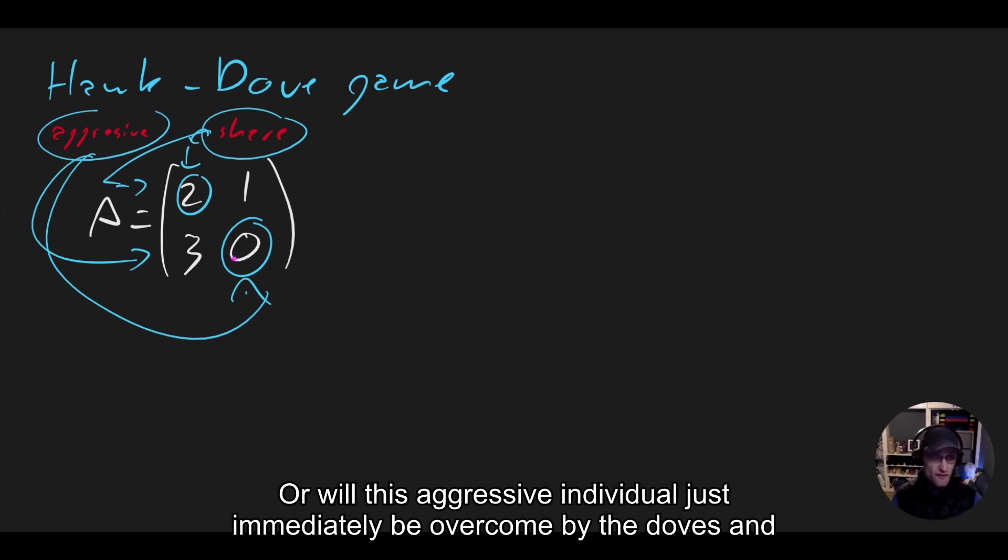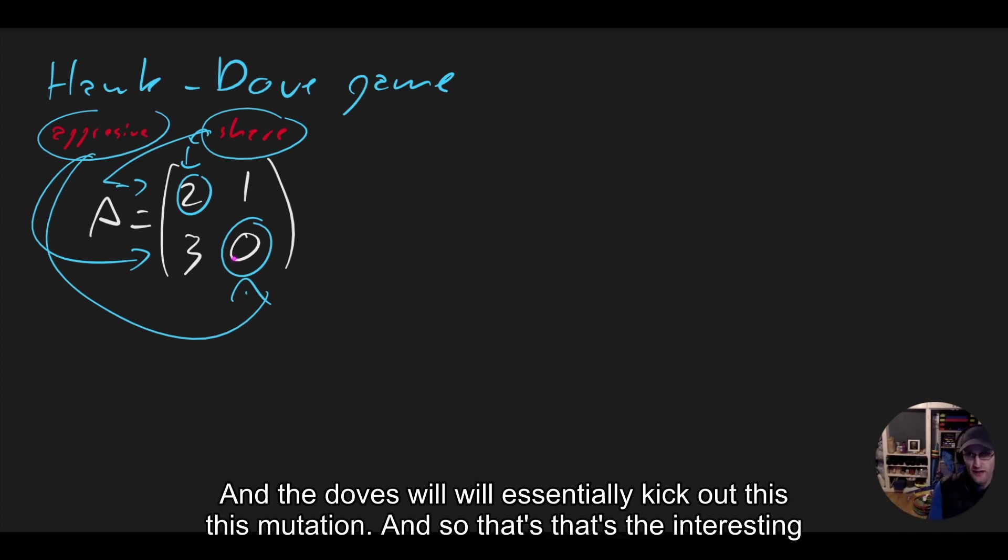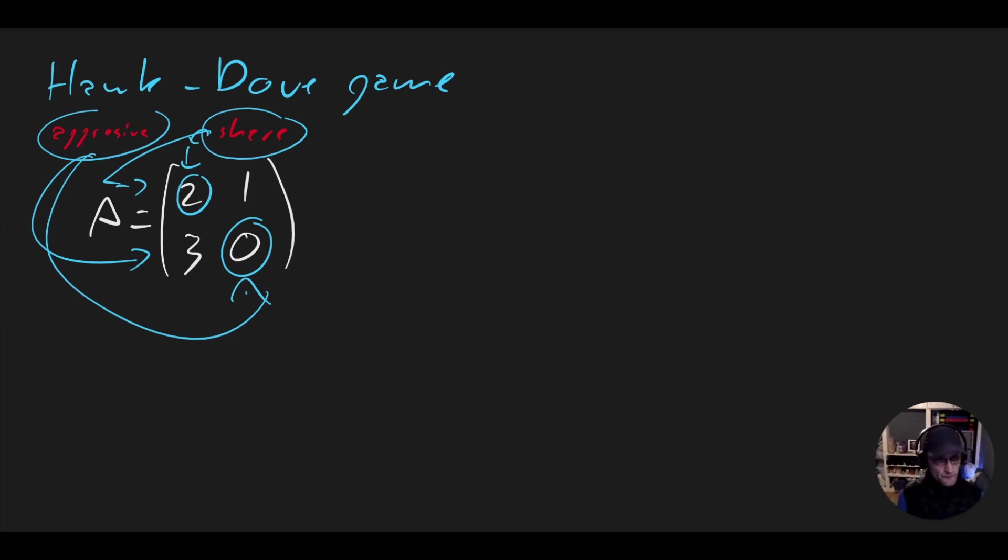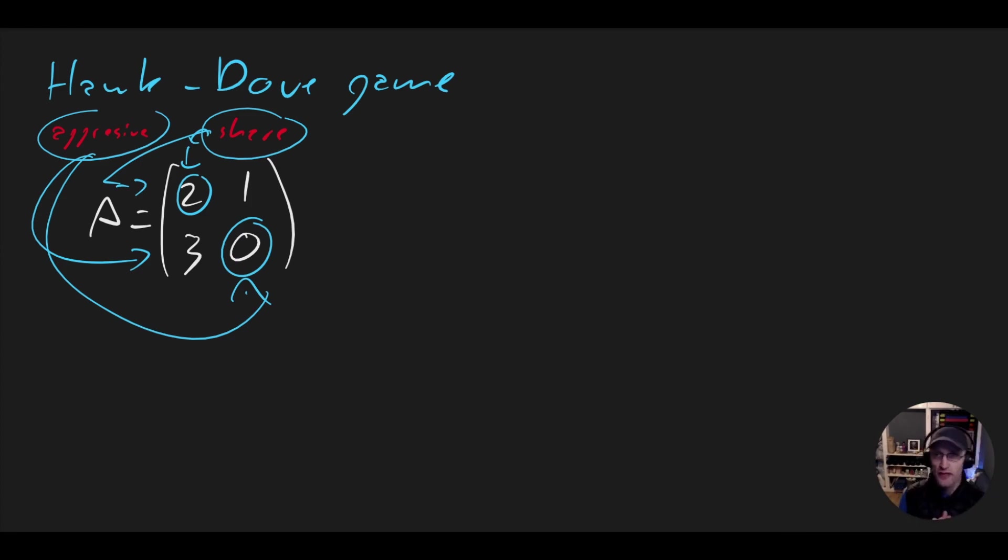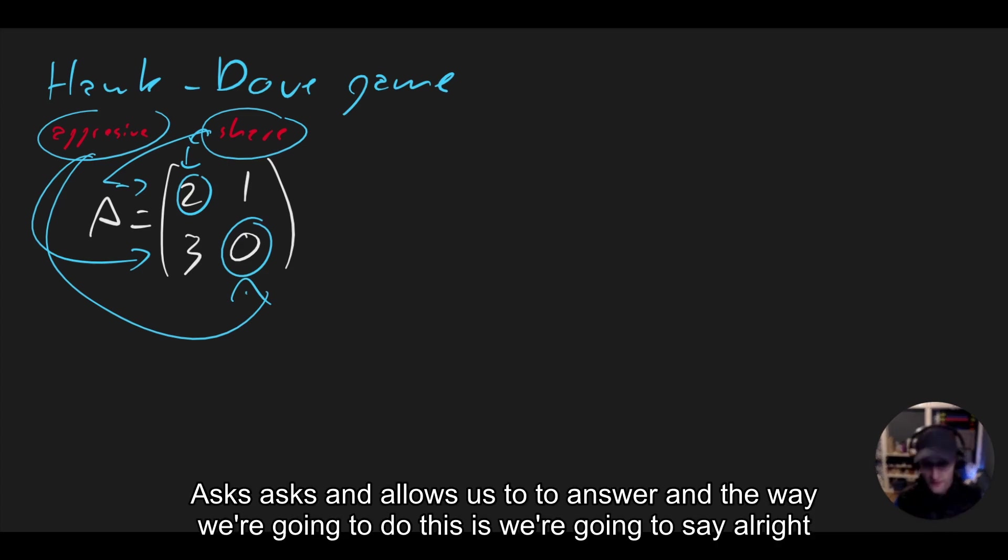Or will this aggressive individual just immediately be overcome by the doves, and the doves will essentially kick out this mutation? And so that's the interesting question that game theory, and this is the area of game theory called evolutionary game theory, asks and allows us to answer.